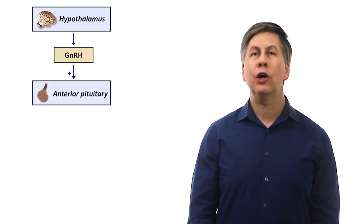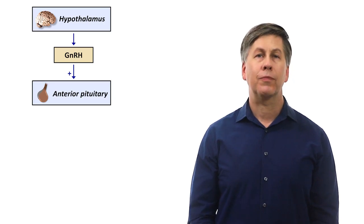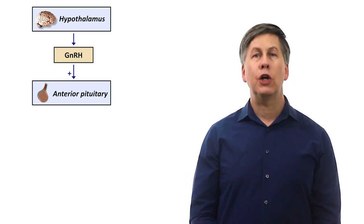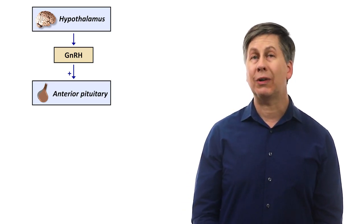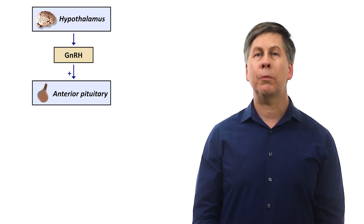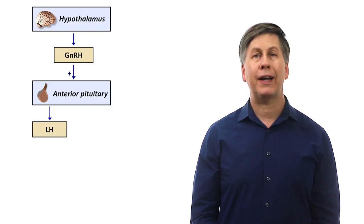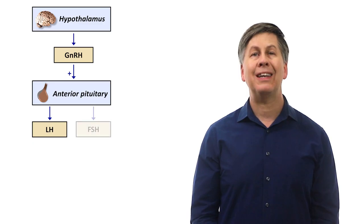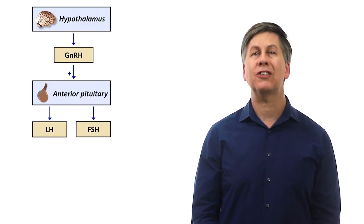The hypothalamus sends GNRH down a thin stalk of tissue called the infundibulum into the anterior pituitary gland, an endocrine organ located just below the brain. In response to GNRH, the anterior pituitary produces and releases two hormones into the bloodstream, LH, which stands for luteinizing hormone, and FSH, which stands for follicle stimulating hormone.